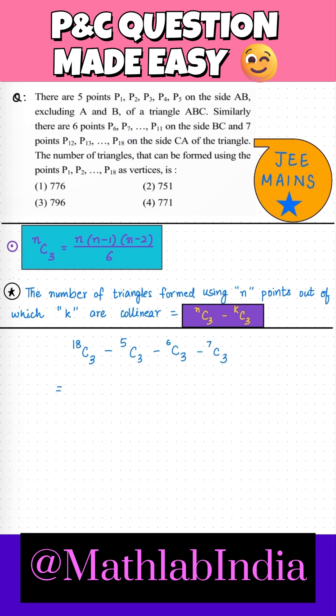So using this formula here, nC3 is n times n minus 1 times n minus 2 divided by 6. So here, if we apply this, after simplification, we finally get 18 times 17 times 16 minus 10 minus 20 minus 35.